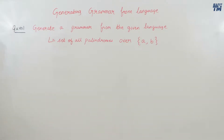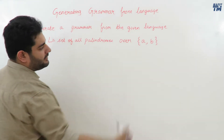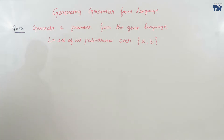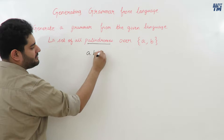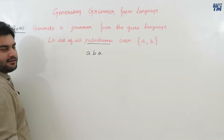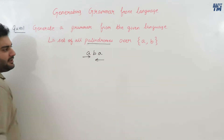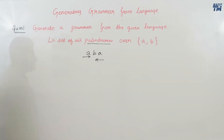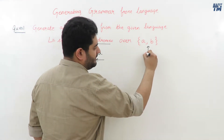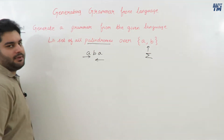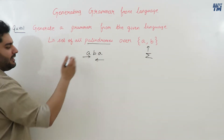The question is: generate a grammar for the given language, and the language is the set of all palindromes over {a, b}. This is a very important question. A palindrome is a string which you read from the start or from reverse and it yields the same result. All such strings are palindrome strings, and our alphabet set is {a, b}, meaning all strings will be a combination of symbols a or b.